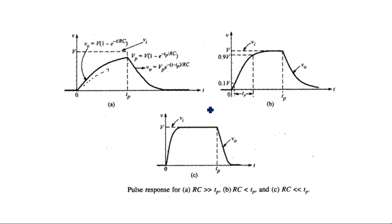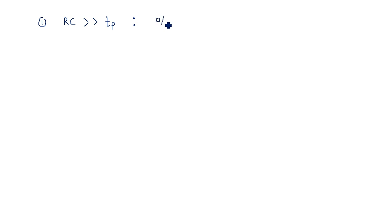The same scenario occurs in three waveforms, but one does it in a faster way and another does it slowly. This is because of the product RC. The charging and discharging period of the capacitor is completely dependent on the product RC. If the RC value is very large compared to tp — that is, if RC is much greater than tp — then the output reaches steady state very slowly.